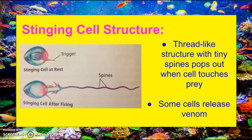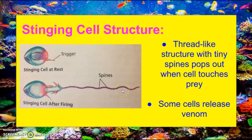Let's take a closer look at the stinging cell structure. When a stinging cell is at rest, it has a little trigger that looks kind of like a little hair. What happens is that hair will brush up against prey, and it'll release a long thread-like structure that has tiny spines on it. Some of these cells release venom; others don't.